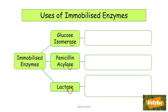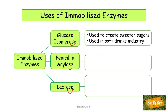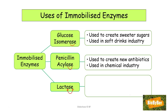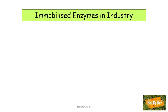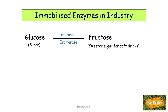Glucose isomerase is used to create sweeter sugars to put into soft drinks. Penicillin acylase is used to create new antibiotics and is very important in the pharmaceutical industry. Lactase is used to create lactose-free milk, toffee, and caramel, and so is used in the food industry. Glucose isomerase catalyzes the breakdown of the sugar glucose into a sweeter sugar, fructose, which is used for the soft drinks industry.